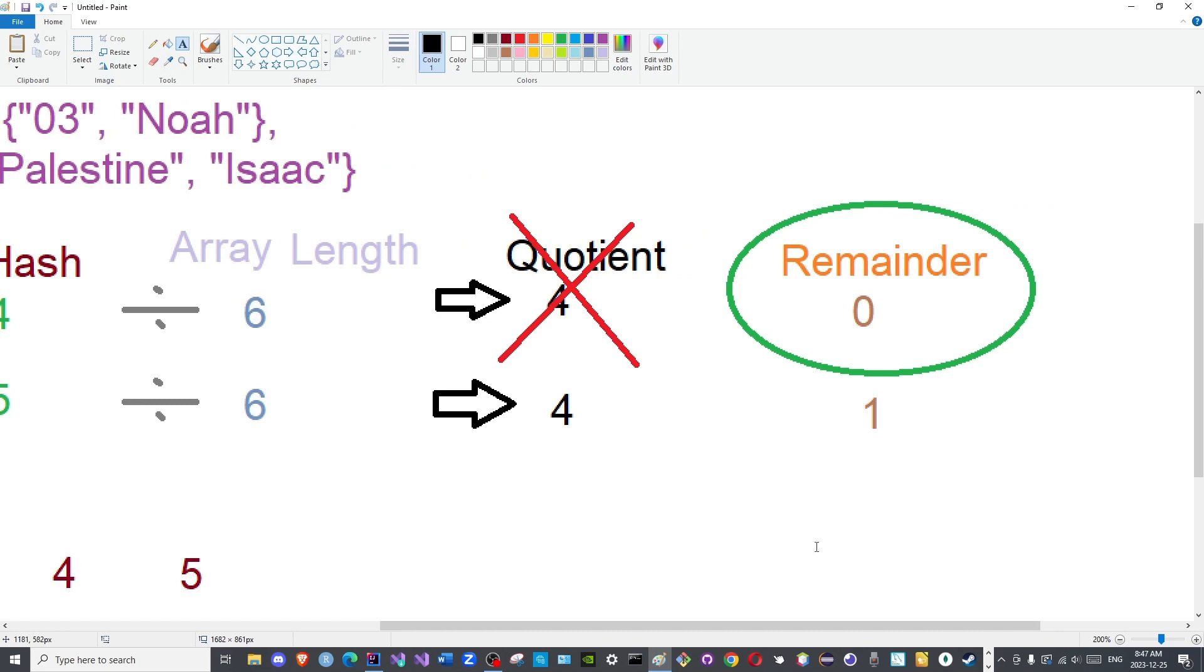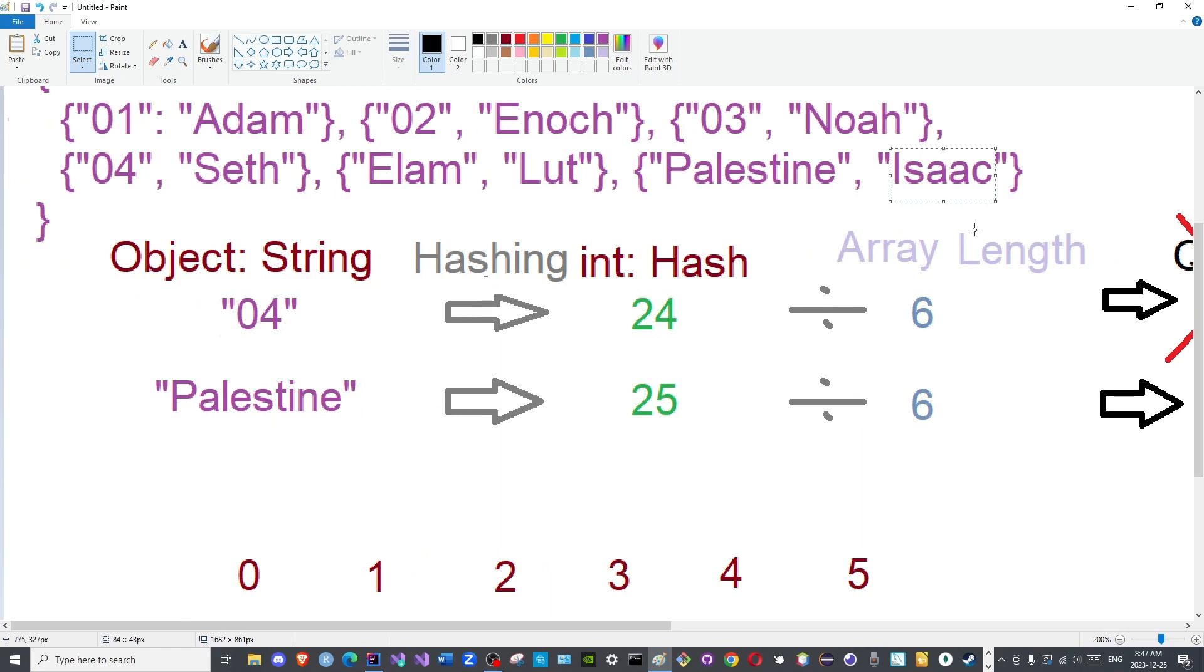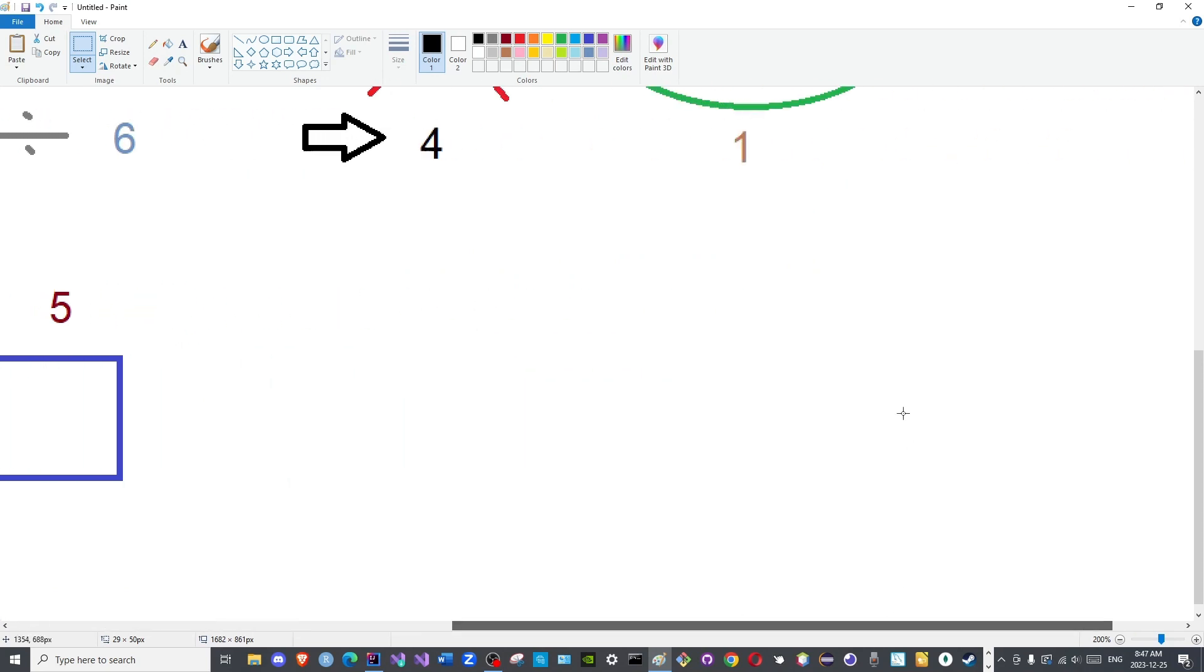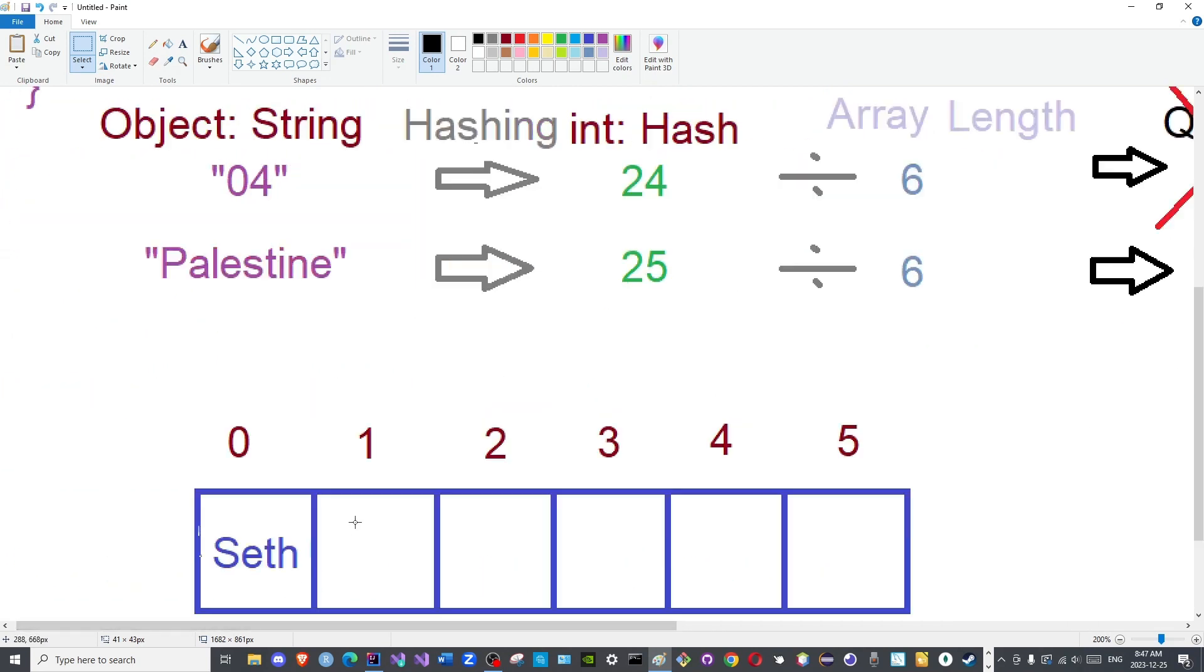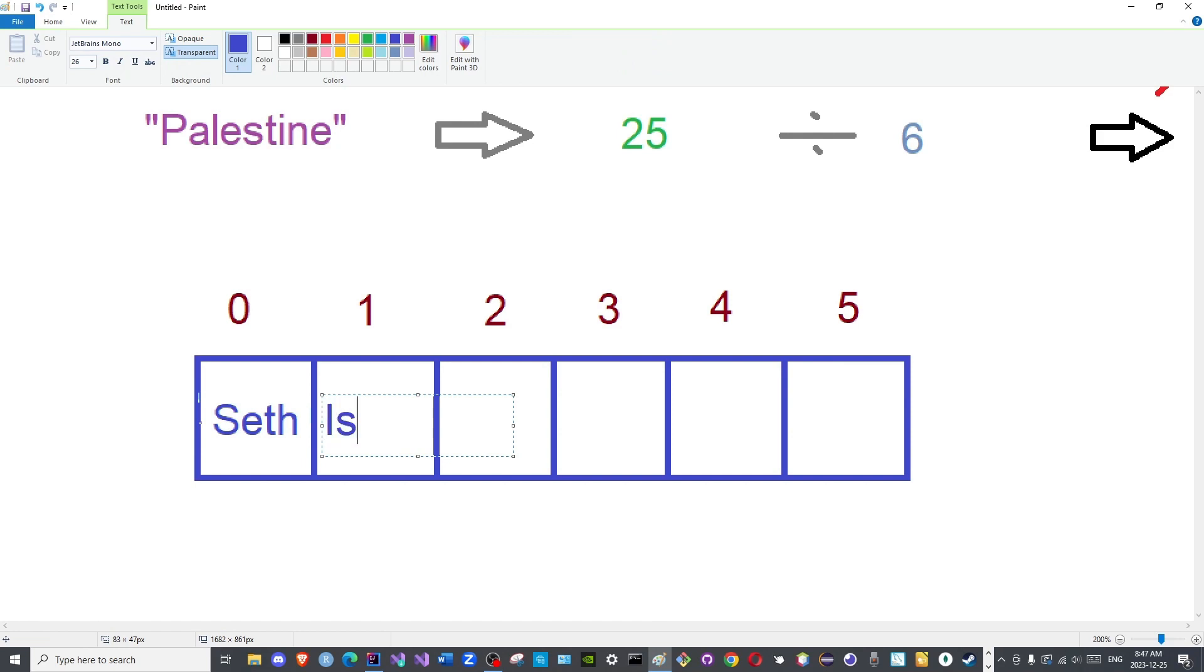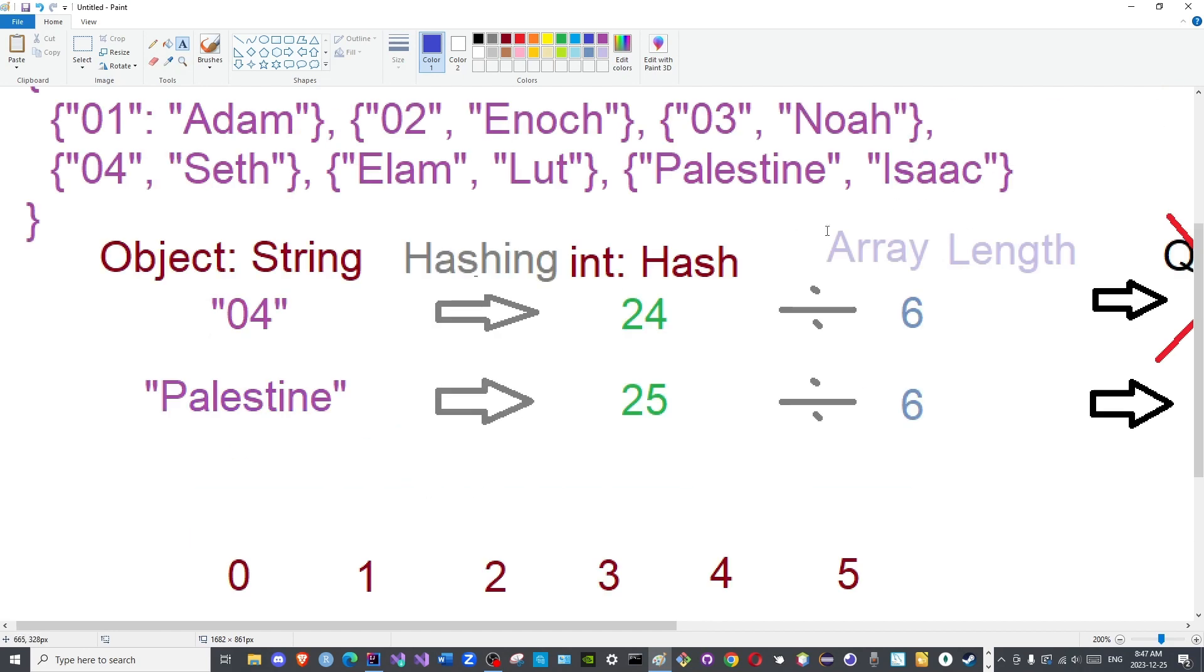This becomes the index associated with this label or this identifier, which means that the name Isaac will be placed at this index, which matches this index here. So here we will place the name Isaac. I know his actual name Ishaq, peace be upon him. So sometimes I forget the anglicized spelling.